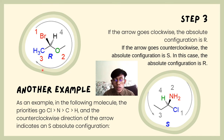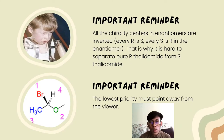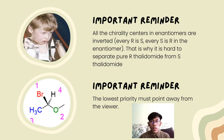Here we have another example showing the S configuration of a compound. When we number the ligands according to their priorities, draw an arrow, and identify its direction as counterclockwise, we determine that the compound has S absolute configuration. There are several important reminders when using the Cahn-Ingold-Prelog method. First, all chirality centers in enantiomers are inverted — every R is S and every S is R in the enantiomer — which is why it is hard to separate the R and S structures of the same compound.